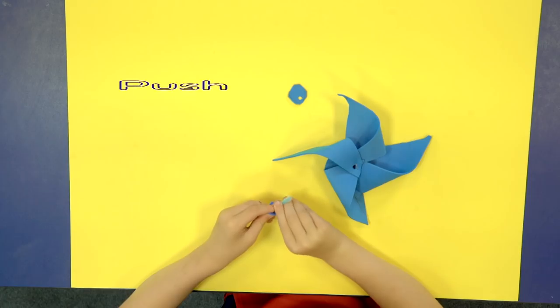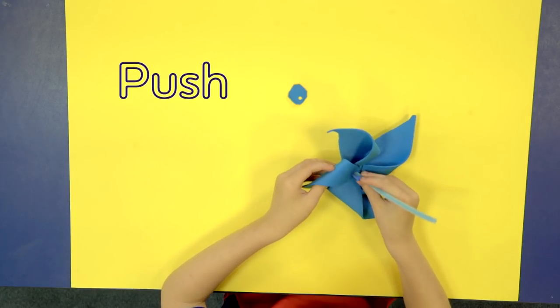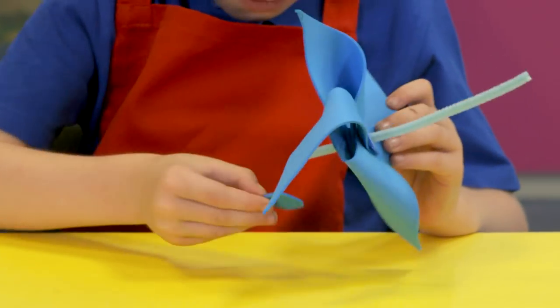Push the pipe cleaner through one circle. Then push the pipe cleaner through the fins and the other circle.